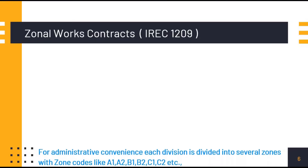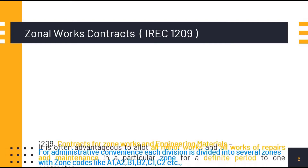Indian Railway Engineering Code Para 1209 explains about the Zonal Works Contracts. For administrative convenience, each division is divided into several zones with zone codes like A1, A2, B1, B2, C1, C2, etc.